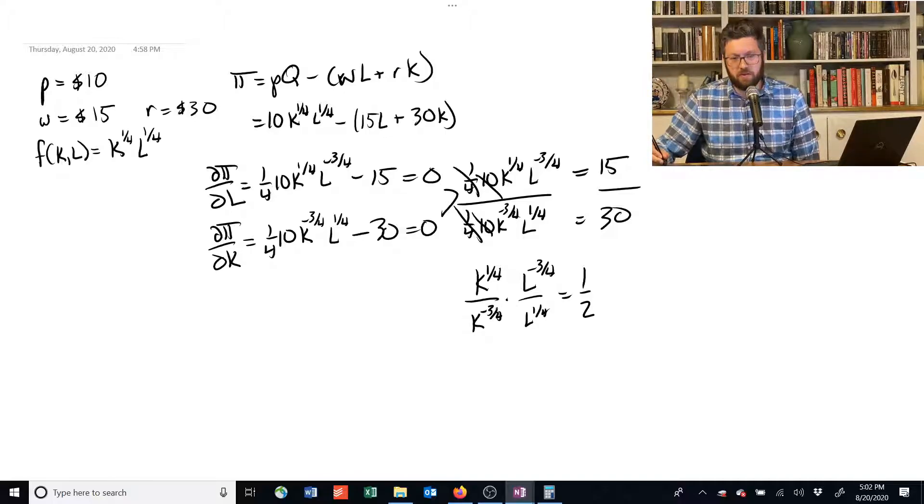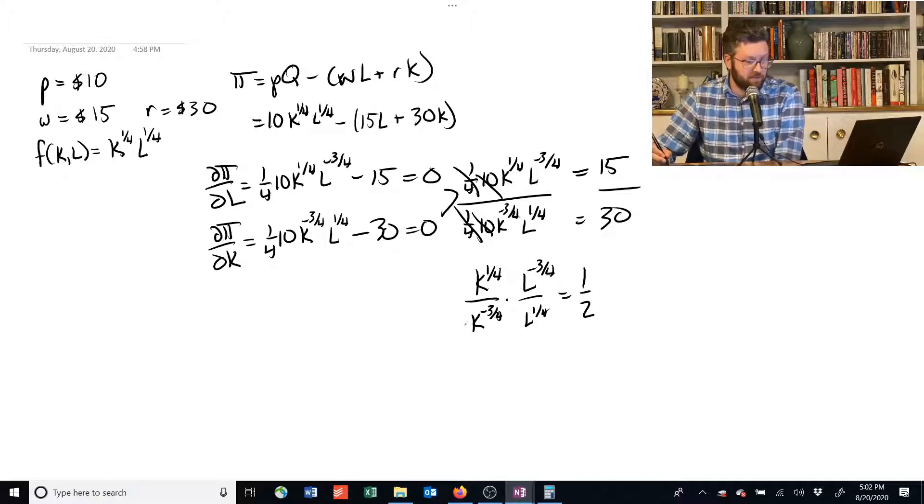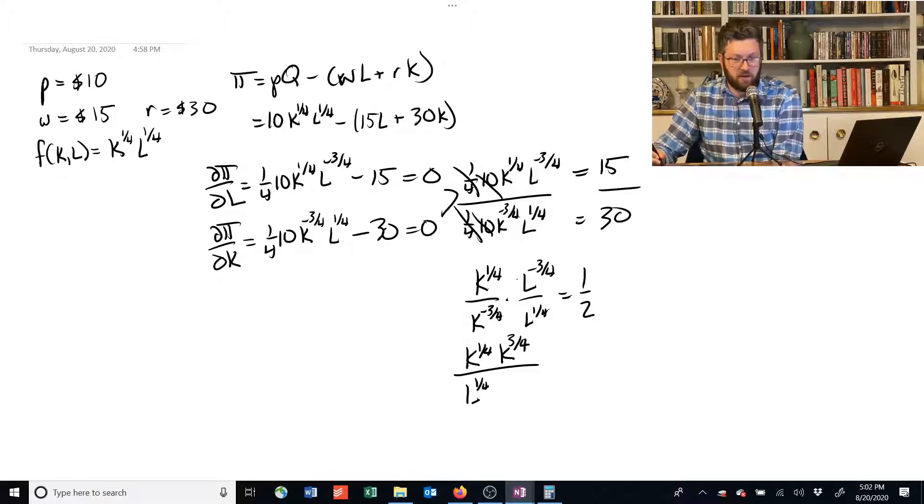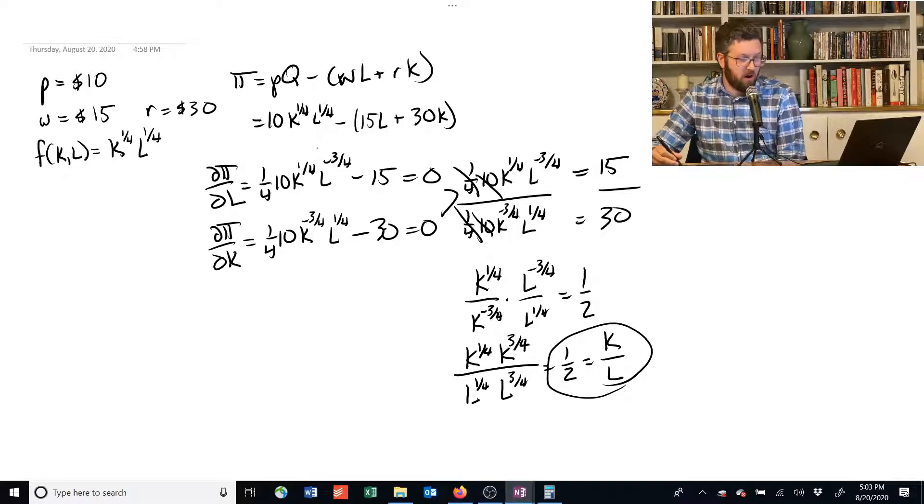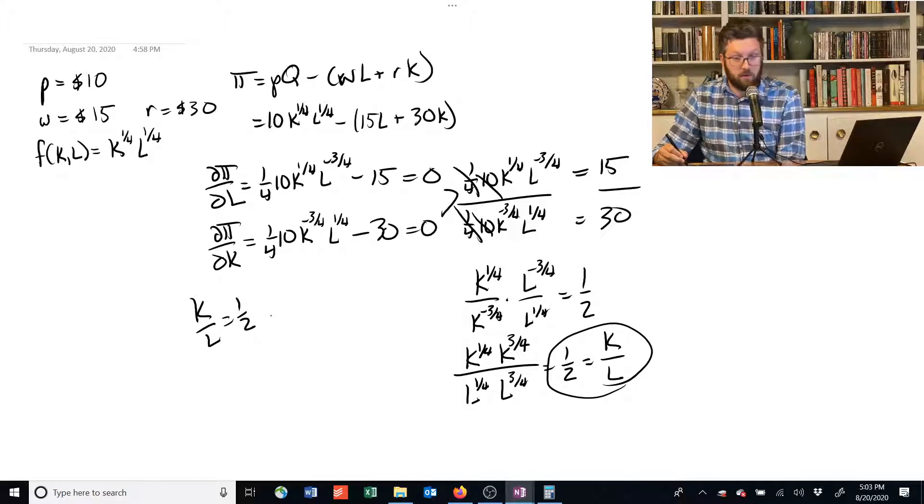If you have an exponent with a negative, if you have a negative exponent, you can flip it either above the divisor or below and take the positive one. K, dividing by K to the negative 3/4 is the same as multiplying by K to the 3/4. On the denominator, we have L to the 1/4. And if we have L to the negative 3/4 in the numerator, that's equivalent to dividing by L to the positive 3/4. K, now we have two Ks on the top and two Ks on the bottom, and we're just going to add the exponents up. 1/4 plus 3/4 is just 1, so this is just K, and 1/4 plus 3/4 on the bottom is just L. Isn't that nice? So we go through all, we start with these big ugly things, and we end up with a very nice simple equation that K divided by L is equal to 1/2.